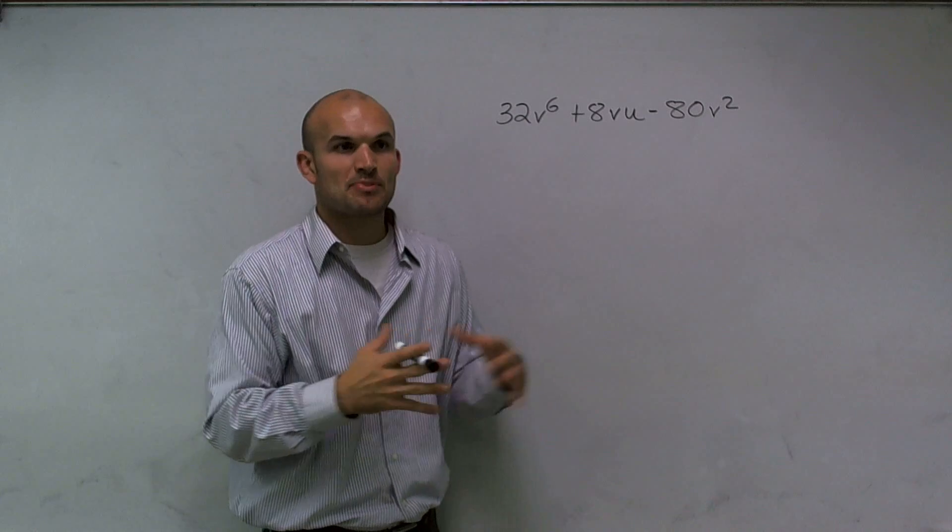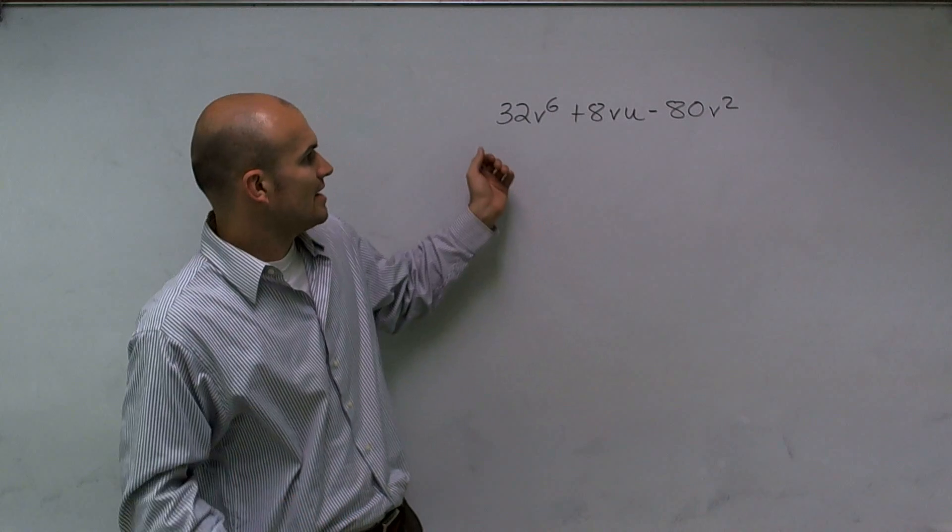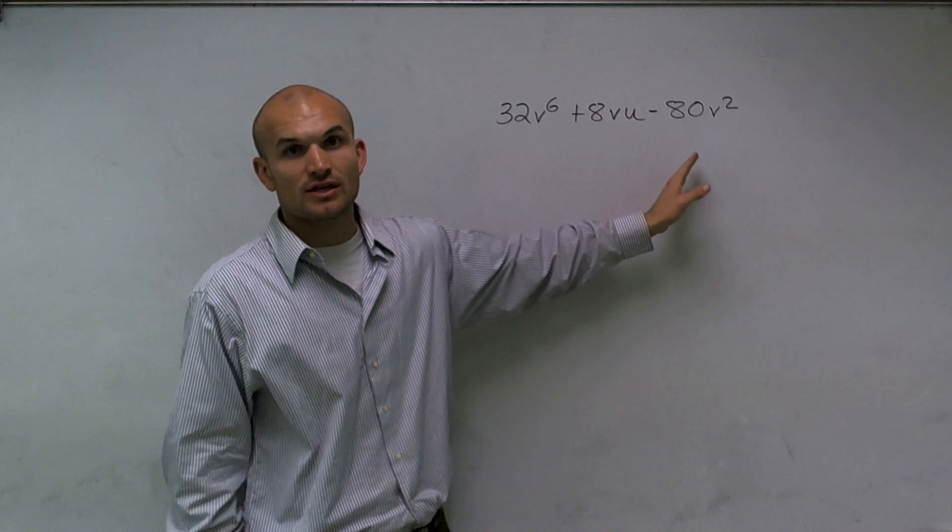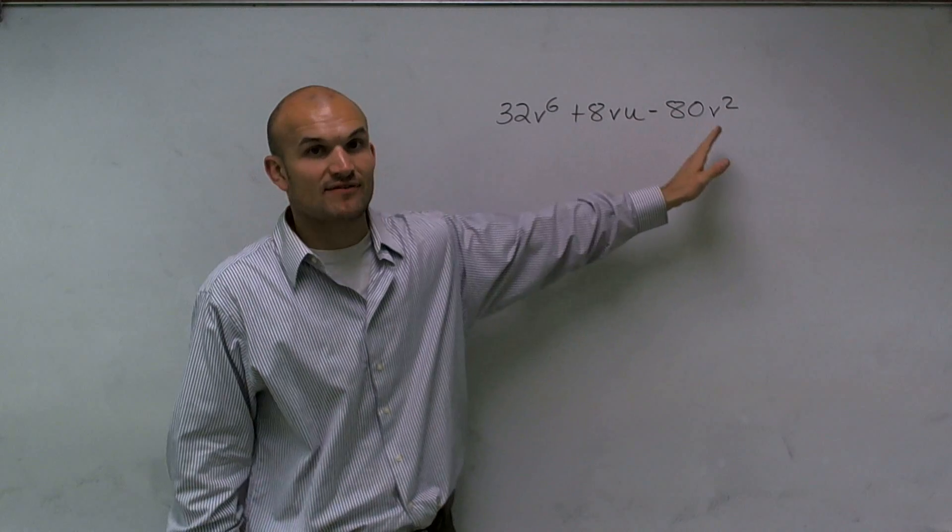A simple way to start with is obviously look at the smallest number. Because if I look at all these numbers, I know that two, since these are all even numbers, I know two evenly divides into all these.